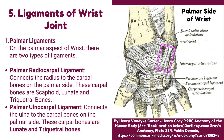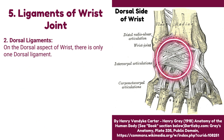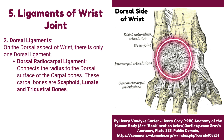Palmar ulnocarpal ligament: it connects the ulna to the carpal bones on the palmar side. These carpal bones are: lunate and triquetral bones. Dorsal ligaments of the wrist joint — on the dorsal aspect of the wrist, there is only 1 dorsal ligament: the dorsal radiocarpal ligament. It connects the radius to the dorsal surface of the carpal bones — scaphoid, lunate, and triquetral bones.